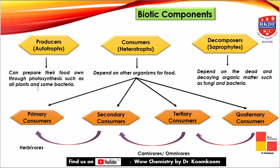The biotic components consist of producers — autotrophs that can prepare their own food, the best example being plants and some bacteria. Next are consumers, also called heterotrophs, which depend on other organisms for food, either directly or indirectly on producers. Then there are decomposers, meaning saprophytes, which depend on dead and decaying organic matter and include fungi and bacteria. Consumers are further classified as primary consumers (generally herbivores), secondary consumers, tertiary consumers, and quaternary consumers (which may be carnivores or omnivores), each feeding on the level below them.